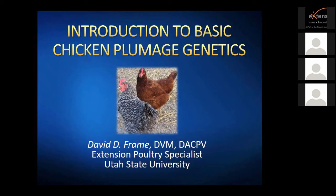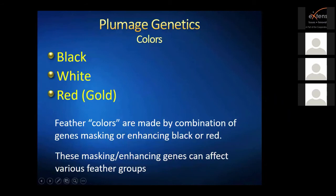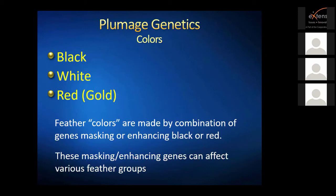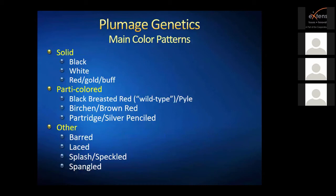In plumage genetics, there are basically two colors — and then white is the lack of color. The base colors in chickens are black, white, or red/gold. These colors in feathers are made up of a combination of genes that mask or enhance black or red pigments. The main color patterns: a solid bird can be black, white, red, gold, or buff colored. Then there are what are called party-colored varieties, where the bird has at least two different colors in its plumage.